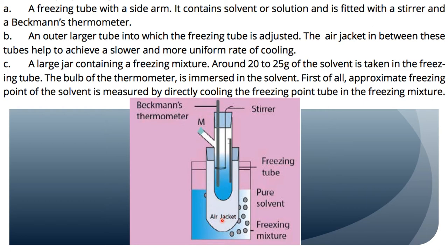The air jacket helps us to achieve a slower and more uniform rate of cooling. This is why the air jacket is placed between the inner freezing tube and the outer large tube — to provide a slower and more uniform rate of cooling. There is also a large jar which contains the inner tube.